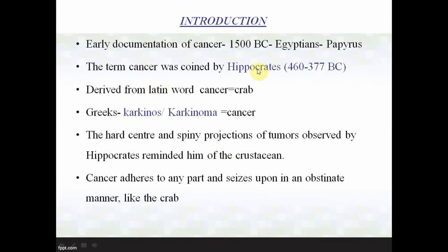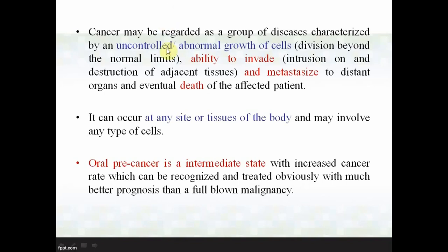Let's see some historical data. The first documentation was around 1500 BC by Egyptians. The term cancer was coined by Hippocrates because the word cancer means crab. The hard center and spiny projections of tumors observed by Hippocrates reminded him of the crustacean, the crab. Cancer adheres to any part and seizes upon it in an obstinate manner like a crab — that's why the name cancer came about.